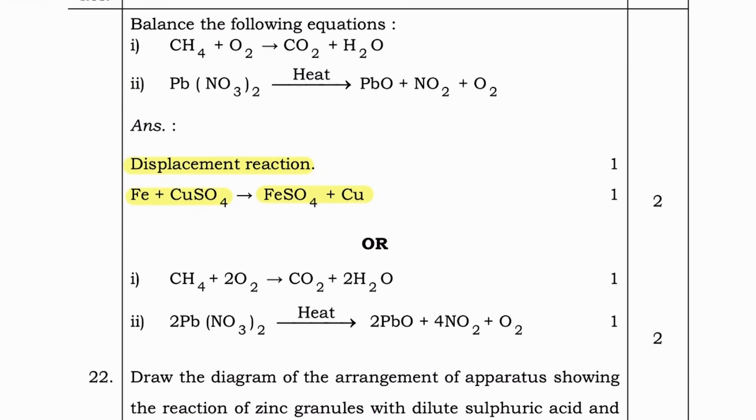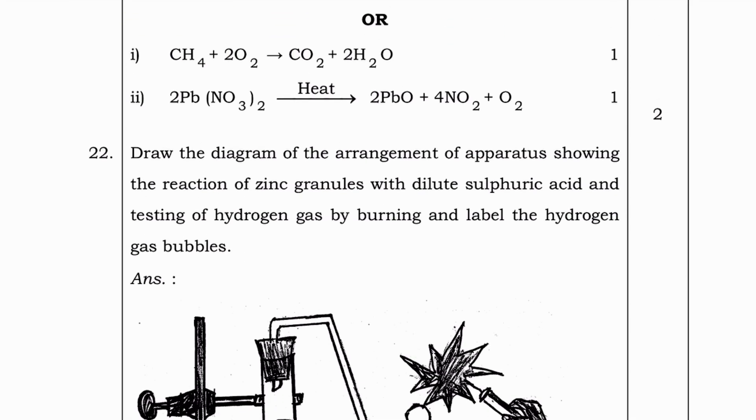Optional question is. Balance the following equations. CH4 plus O2 gives CO2 plus H2O. And Pb(NO3)2 when heated gives PbO plus NO2 plus O2. Answer is. For first CH4 plus 2O2 gives CO2 plus 2H2O. And for second, 2Pb(NO3)2 when heated it will give 2PbO plus 4NO2 plus O2.